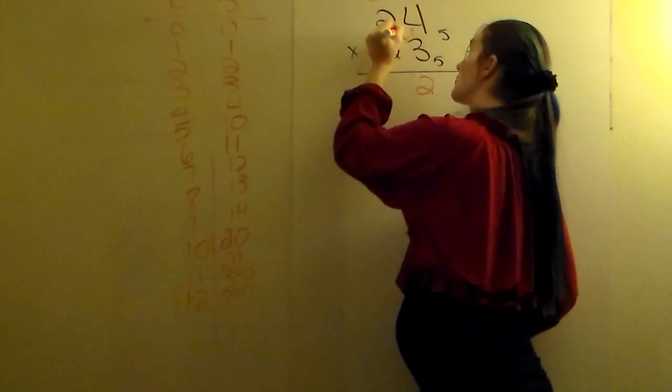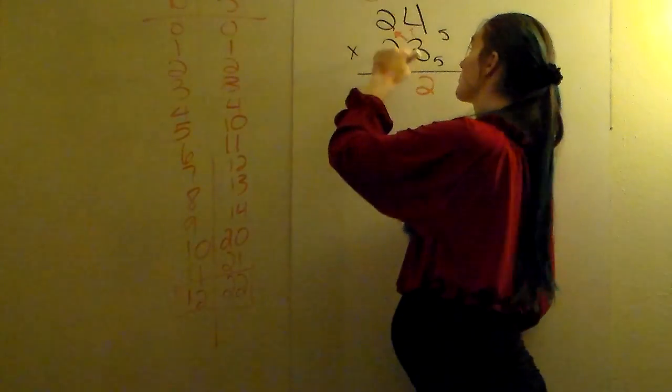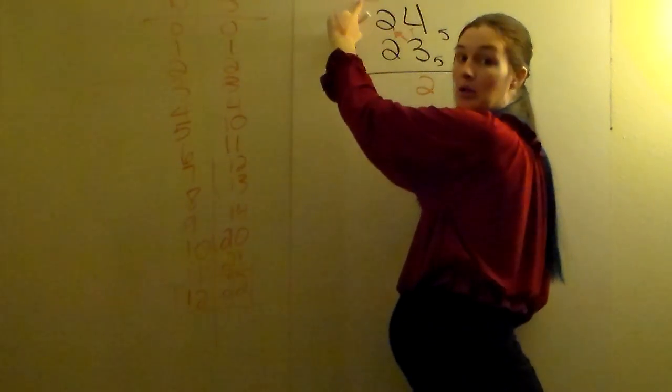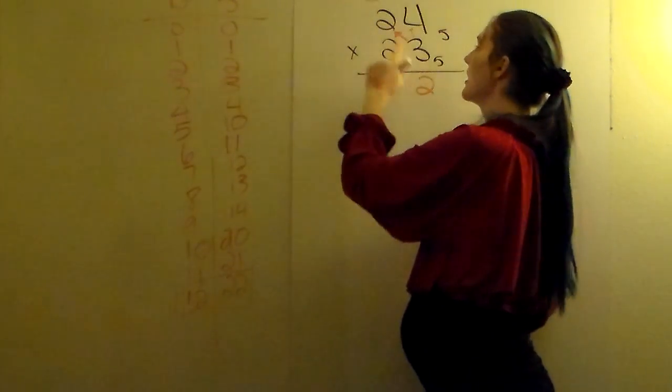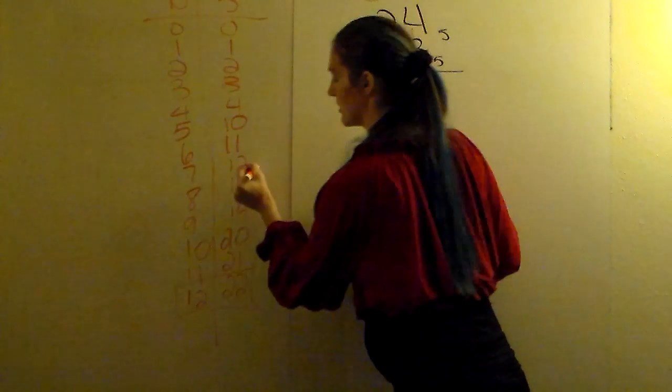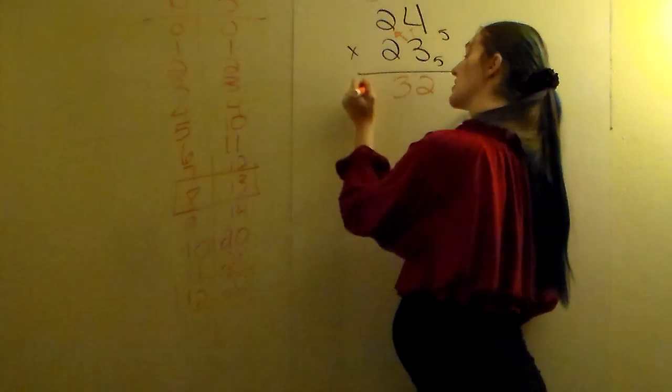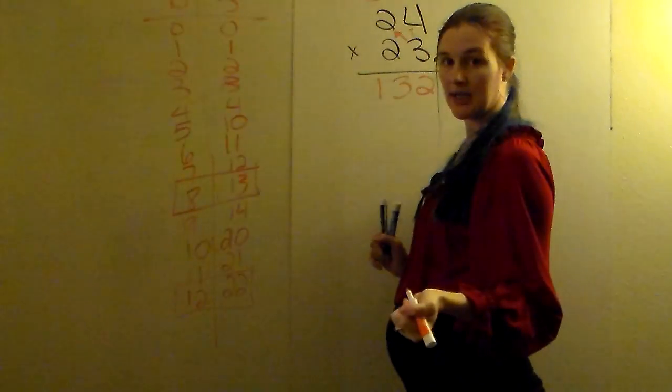Then you're going to do 3 times 2 and add the extra 2. So 3 times 2 is 6, plus 2 would be 8. Are we allowed an 8 in base 5? Instead we write 13. There's nowhere to carry the 1, so you just drop it down.